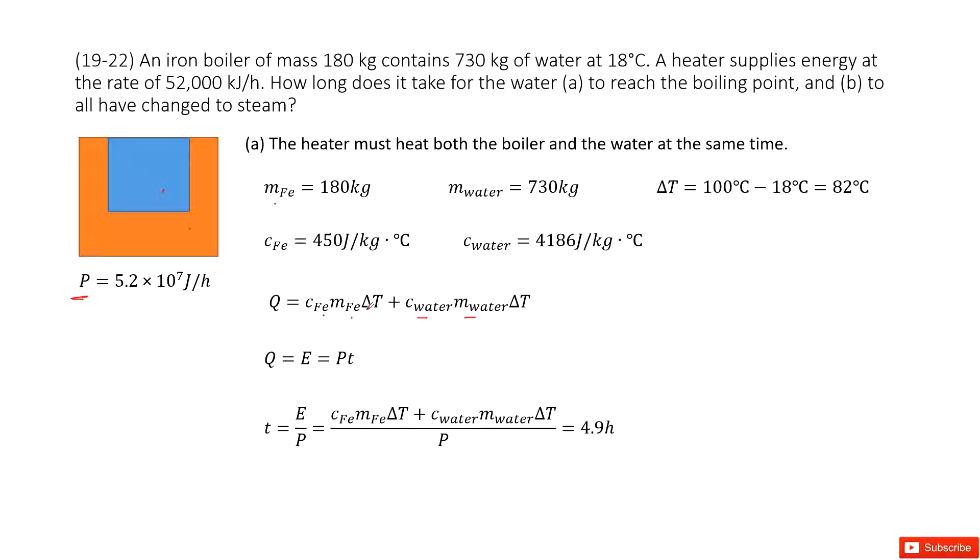Now we can look at ΔT, the temperature change. For water to reach the boiling point, the temperature is 100°C. Initially, it's 18°C. Therefore, ΔT is 82°C. We can input all the known quantities to get the heat absorbed by the boiler and water.